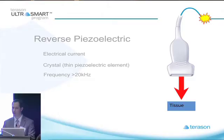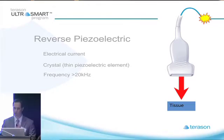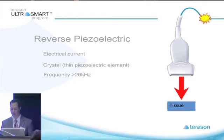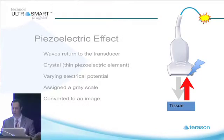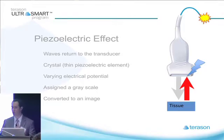The whole concept of how ultrasound is generated is by the reverse piezoelectric effect. Electric current flows down to the transducer and goes to a crystal at the tip of the transducer — a very thin piezoelectric element. That generates a signal of sound waves, and by definition, ultrasound waves are greater than 20 kilohertz.